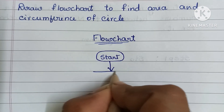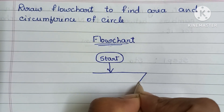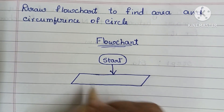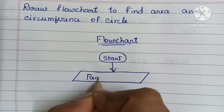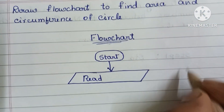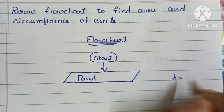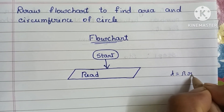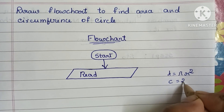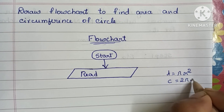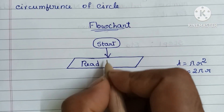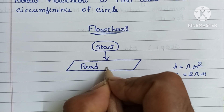Next, we have to read the input value. The input value is always written within a parallelogram shape. To find the area and circumference of a circle, we need the radius, so here we read the input value R.